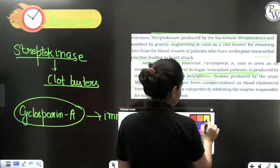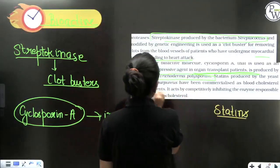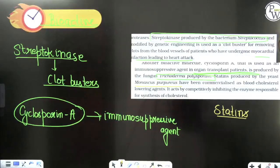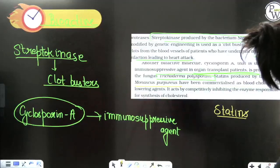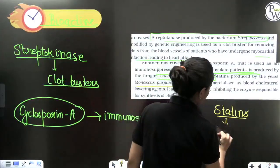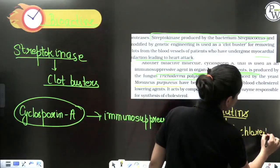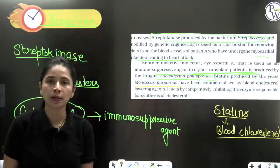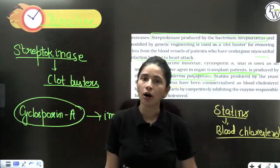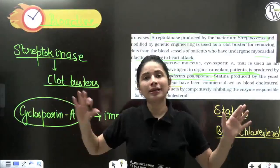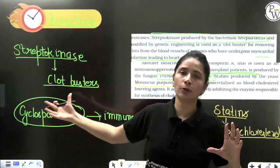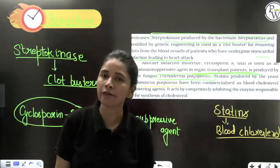The third important bioactive molecule is statins, obtained from the yeast Monascus purpureus, and they are given to control blood cholesterol levels. When cholesterol increases, doctors may prescribe statins to control it and protect the liver. So these are the different uses of microbes at industrial level to obtain beverages, antibiotics, chemicals, enzymes, and bioactive molecules.